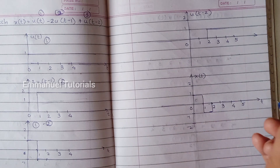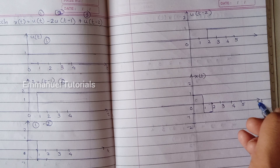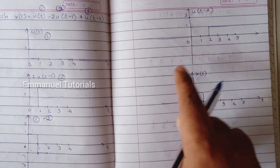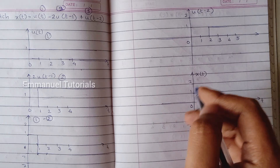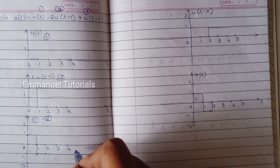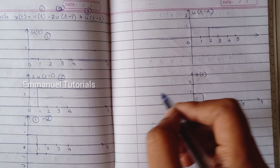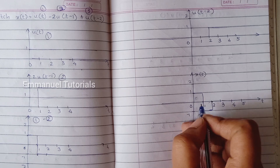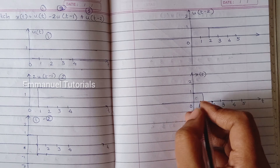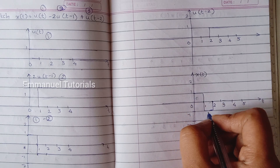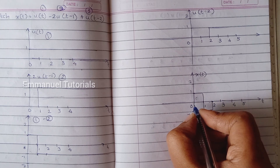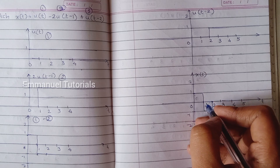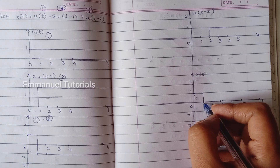At t=3, the first signal's amplitude is minus 1 and the second signal's amplitude is 1, so minus 1 plus 1 is 0. This behavior continues until infinity for both signals, so minus 1 plus 1 is going to be 0 continuously. Our resultant signal therefore gets a definite step shape of output, starting from 0 to 2 and having a step change in amplitude from 1 to minus 1 at t equal to 1.